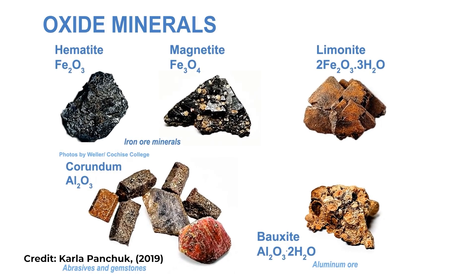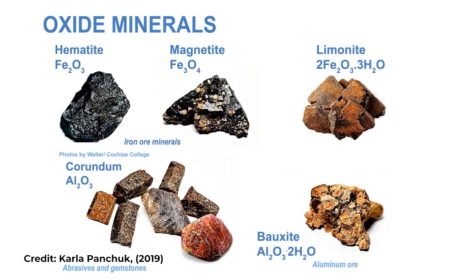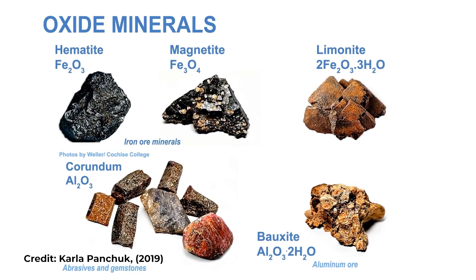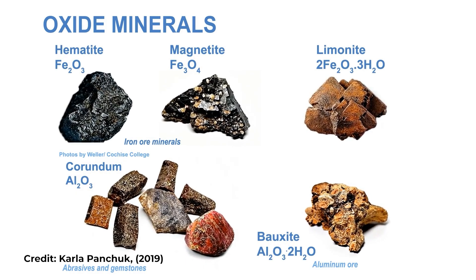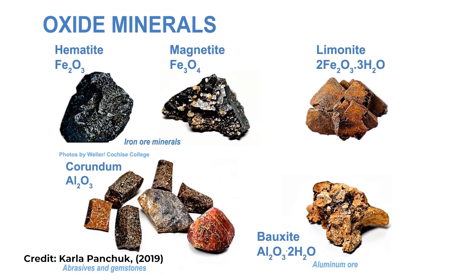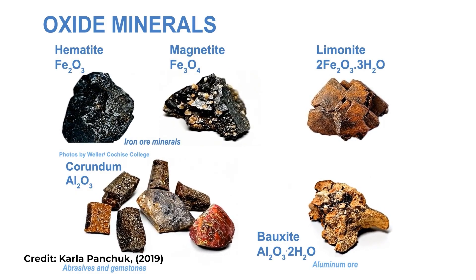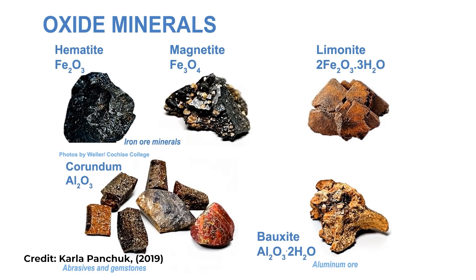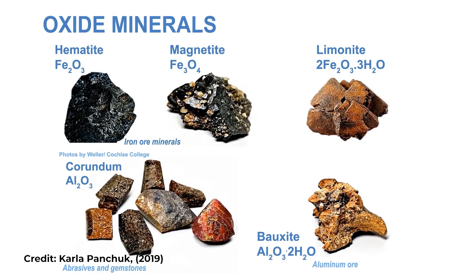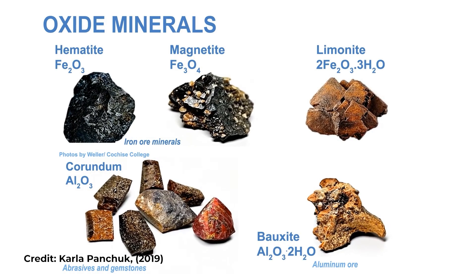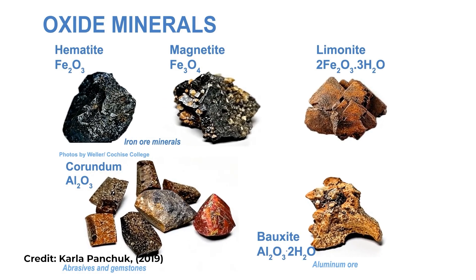Oxides: two good examples of this group are hematite, with two iron atoms to three oxygen atoms, and magnetite, with three iron atoms and four oxygen atoms. As you can see, oxides contain one or two metal elements combined with oxygen, and many important metals are found as oxides.